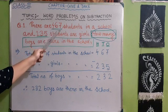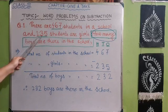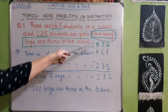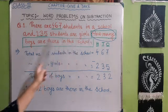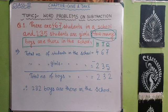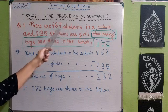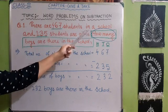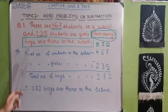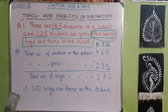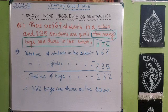There are 467 students in a school and 235 students are girls. How many boys are there in the school? We have to follow BUCK. First, we box the problem: 'How many boys are there in the school?' — this is what we need to find out. Then we underline the information needed: 467 students are there in the school, and 235 students are girls among them. Then we circle the clue word: 'how many.' From the clue words, we understand that we have to subtract.